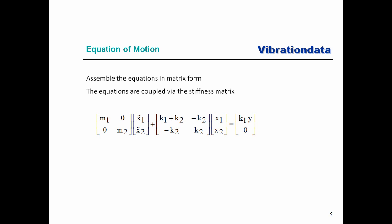The next step is to assemble those equations in matrix form. We have the mass matrix, which is symmetric and in this case diagonal: M1 and M2 along the diagonal, off-diagonal terms both zero. Then a vector of absolute accelerations of mass 1 and mass 2. Plus we have the stiffness matrix — also symmetric, but fully populated with non-zero off-diagonal terms, so the system is coupled through its stiffness.